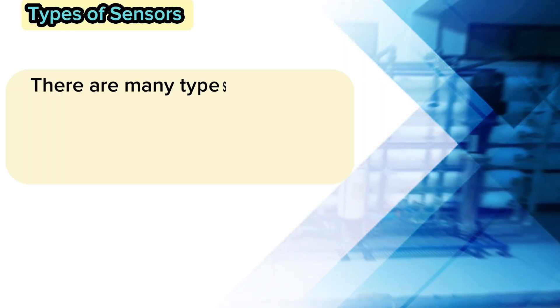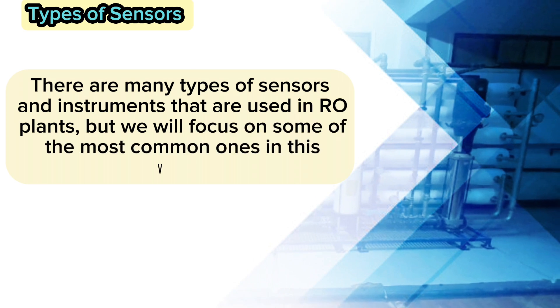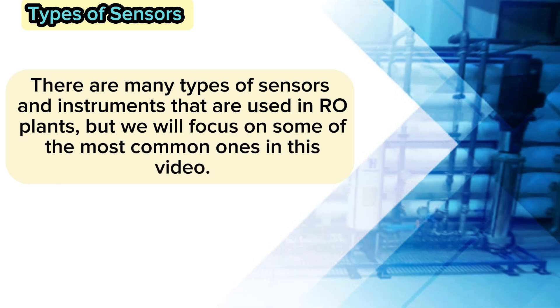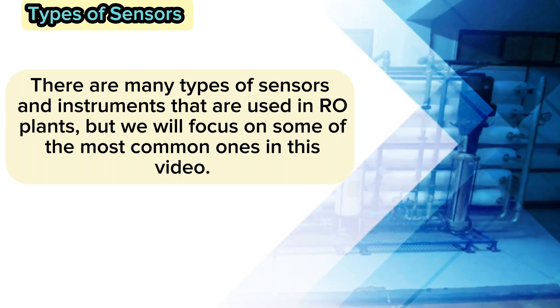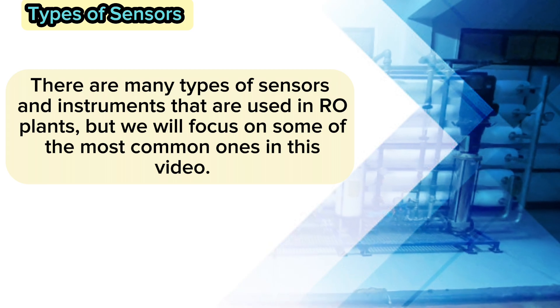There are many types of sensors and instruments used in RO plants, but we will focus on some of the most common ones in this video. Number 1: Pressure Sensors.